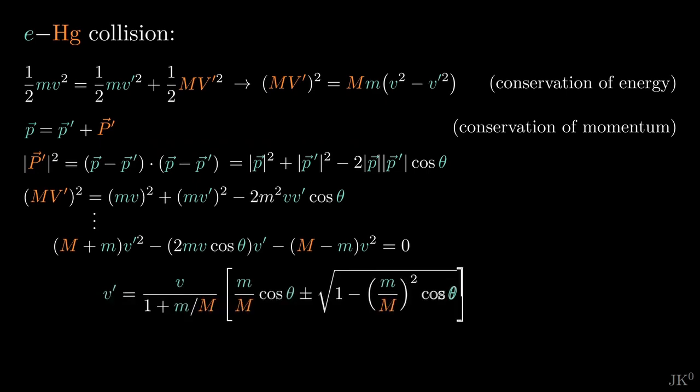After some algebra, we find that the speed of the electron after the collision is this. We can simplify this expression by noticing that the mercury atom is almost half a million times more massive than the electron, so the ratio of their masses can be neglected. And this expression reduces to simply V prime equals V, where I have ignored the unphysical negative solution.